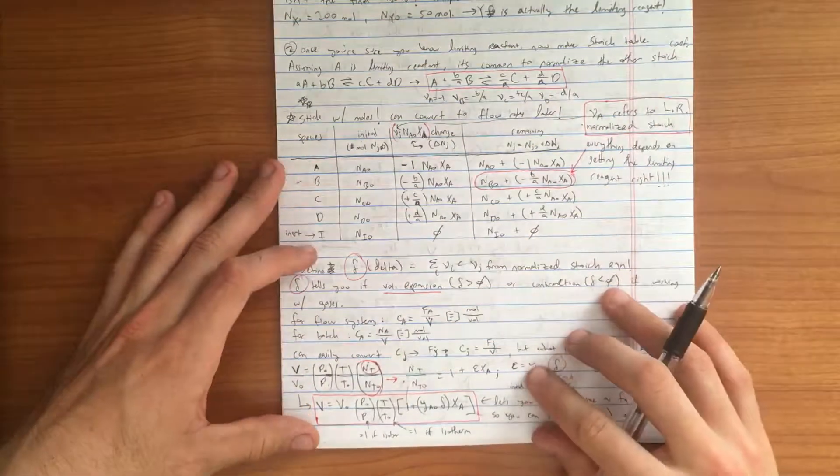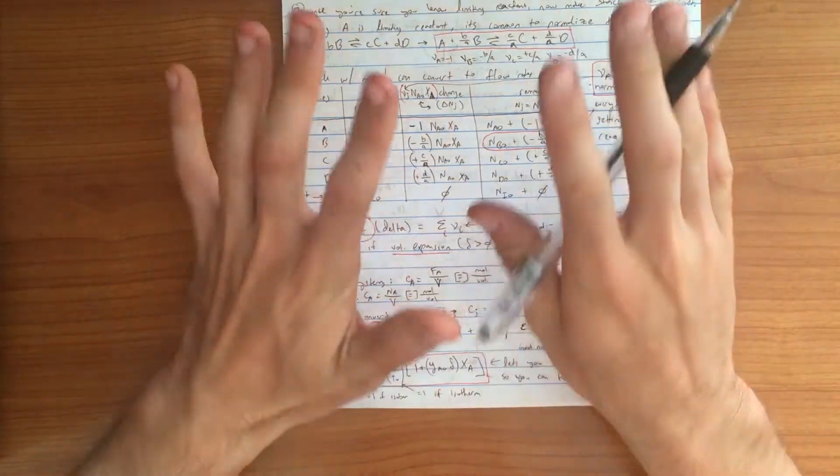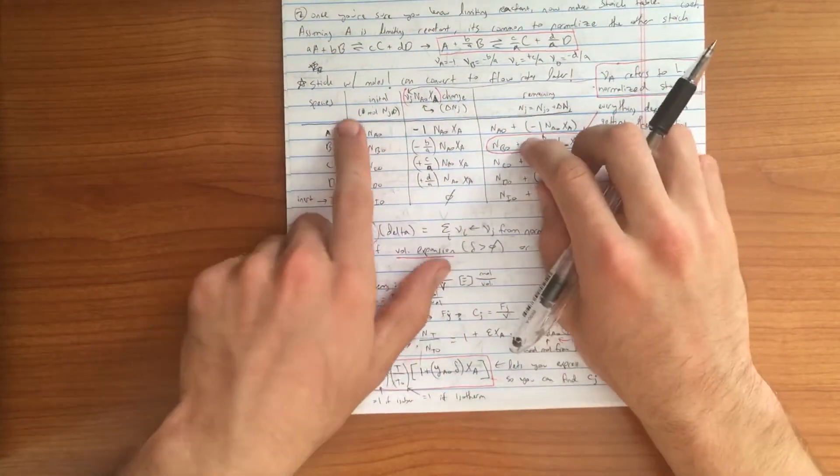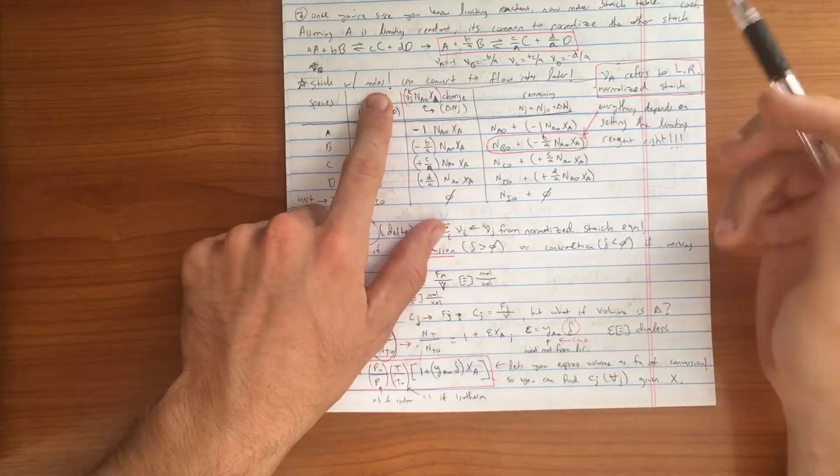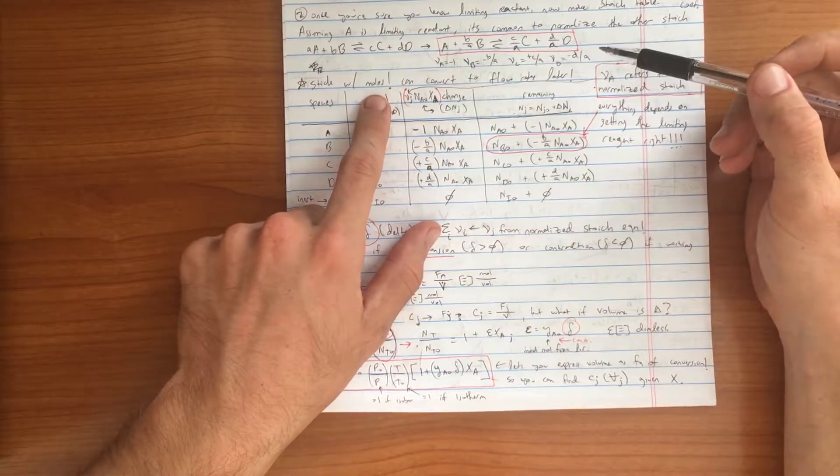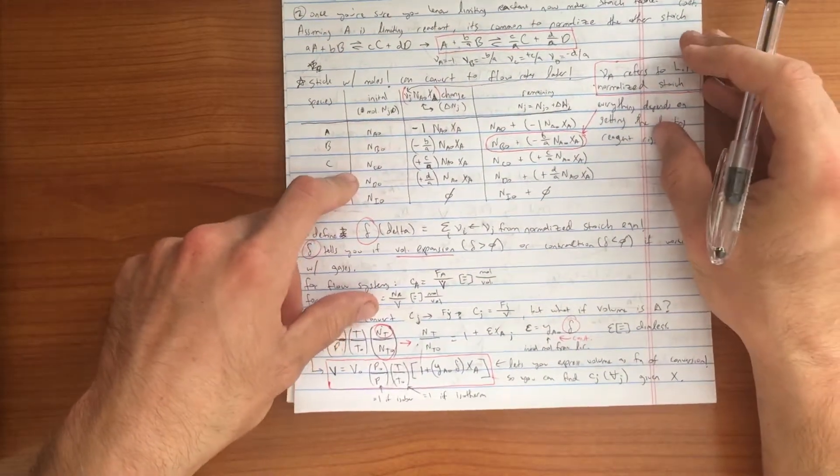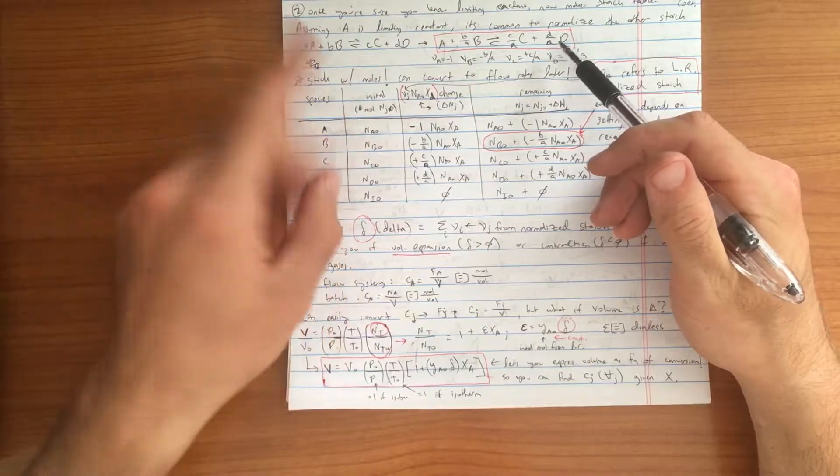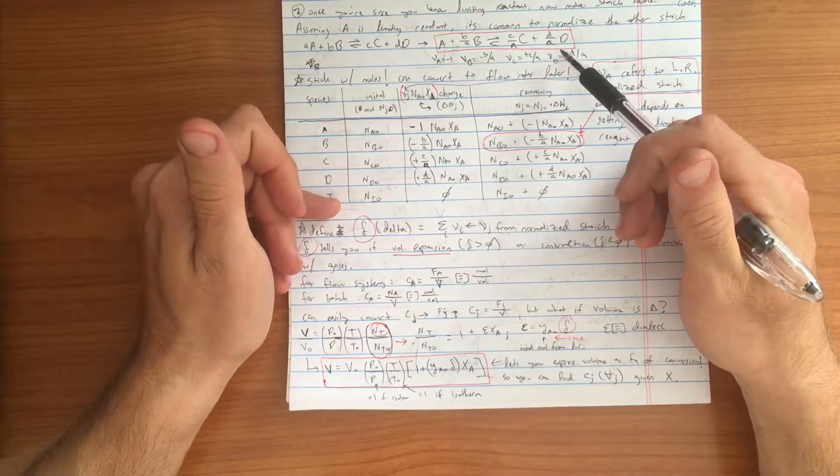An important thing to keep in mind while you are solving or creating a stoichiometric table is it is best practice and you'll avoid making a lot of mistakes if you stick with moles. Why is it important to stick with moles? Because if you're dealing with reactors that change volume, if you work with concentrations or volumetric flow rates, it will give you problems later on because you are not keeping track of that. Rule of thumb: stick with purely the number of moles of each species in your reactor.